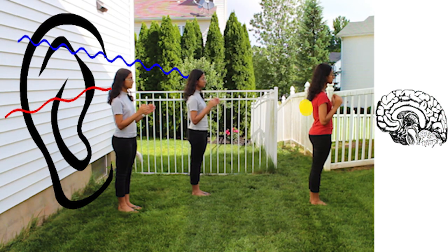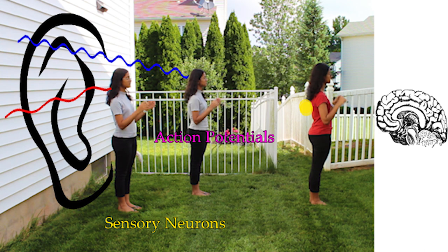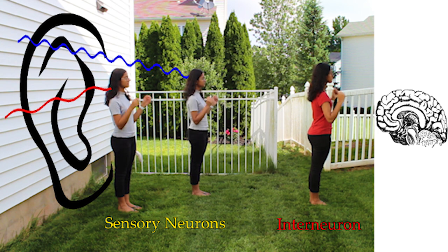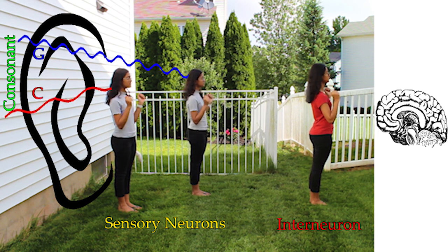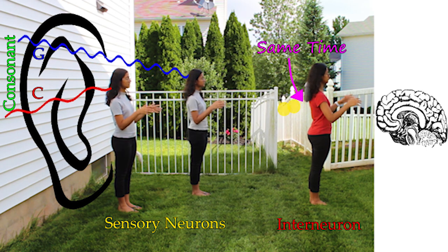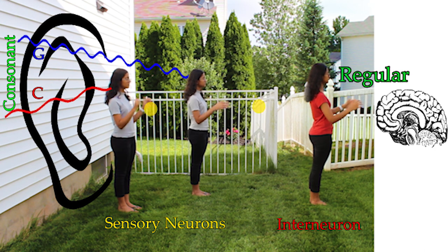But why does our brain like consonance more than dissonance? Let us consider a simple model of the way sound travels from the ear to the brain. Two sensory neurons react to different waves. Each sends an electrical signal, known as an action potential, to the interneuron, which sends the final signal to the brain. The interneuron fires when it receives the signal from either or both sensory neurons. With a consonant sound, the signals from the sensory neurons arrive at the same time, so the interneuron still fires just once, then recharges before it fires again. The result is a regular string of pulses.